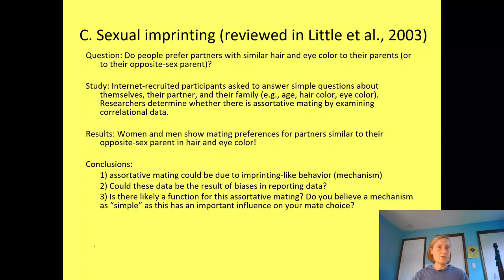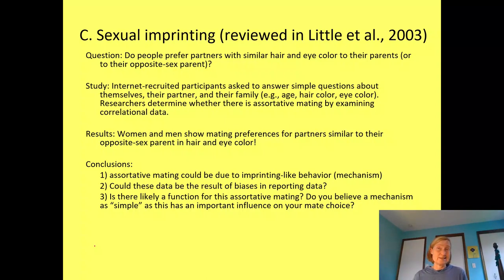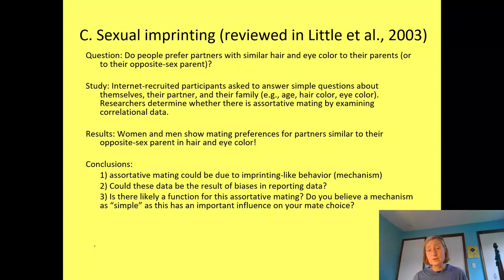Of course, these data could be biased — it was an internet survey where participants simply reported hair and eye color, and those can be easy to misreport. It could also be that assortative mating is happening and there is adaptive value to it. Can we think of a function for mating with someone who matches your opposite-sex parent in looks?